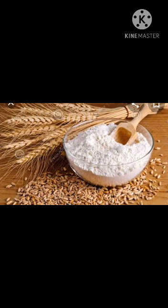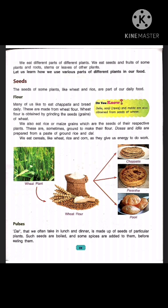Now let's read question number 3: How do we obtain wheat flour? Children, wheat flour is obtained by grinding the seeds of wheat. You can see in this picture the grains of wheat. For the answer of question number 3, let's read page number 59: Wheat flour is obtained by grinding the seeds or grains of wheat.